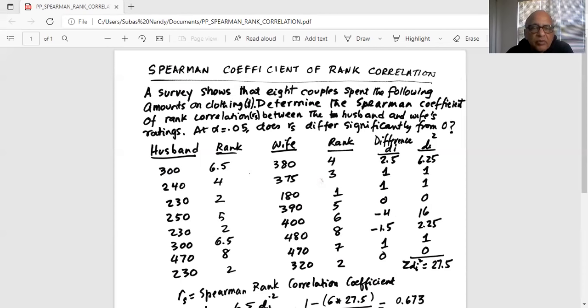For example, the first difference between husband and wife is 6.5 minus 4 which is 2.5. The next one is 4 minus 3. 4 rank for the husband, 3 for the wife, 4 minus 3 is 1. The next one is 2 minus 1 is 1 and so forth. The fourth ranking is actually 5 minus 5, 0. The fifth ranking is 2 minus 6 is minus 4. And the next one is 6.5 minus 8 is minus 1.5 and so forth.